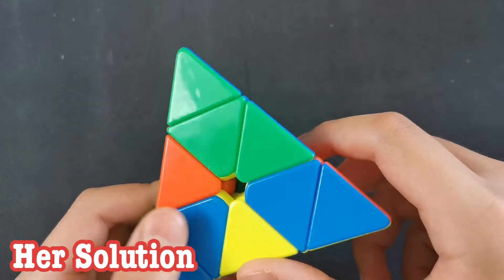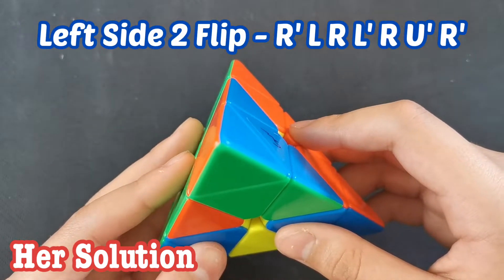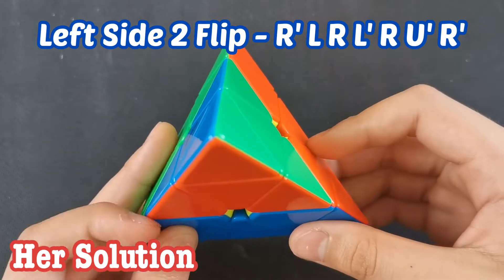And then she did this two flip L, which is just the front two, which is sledge, right insert, U'.